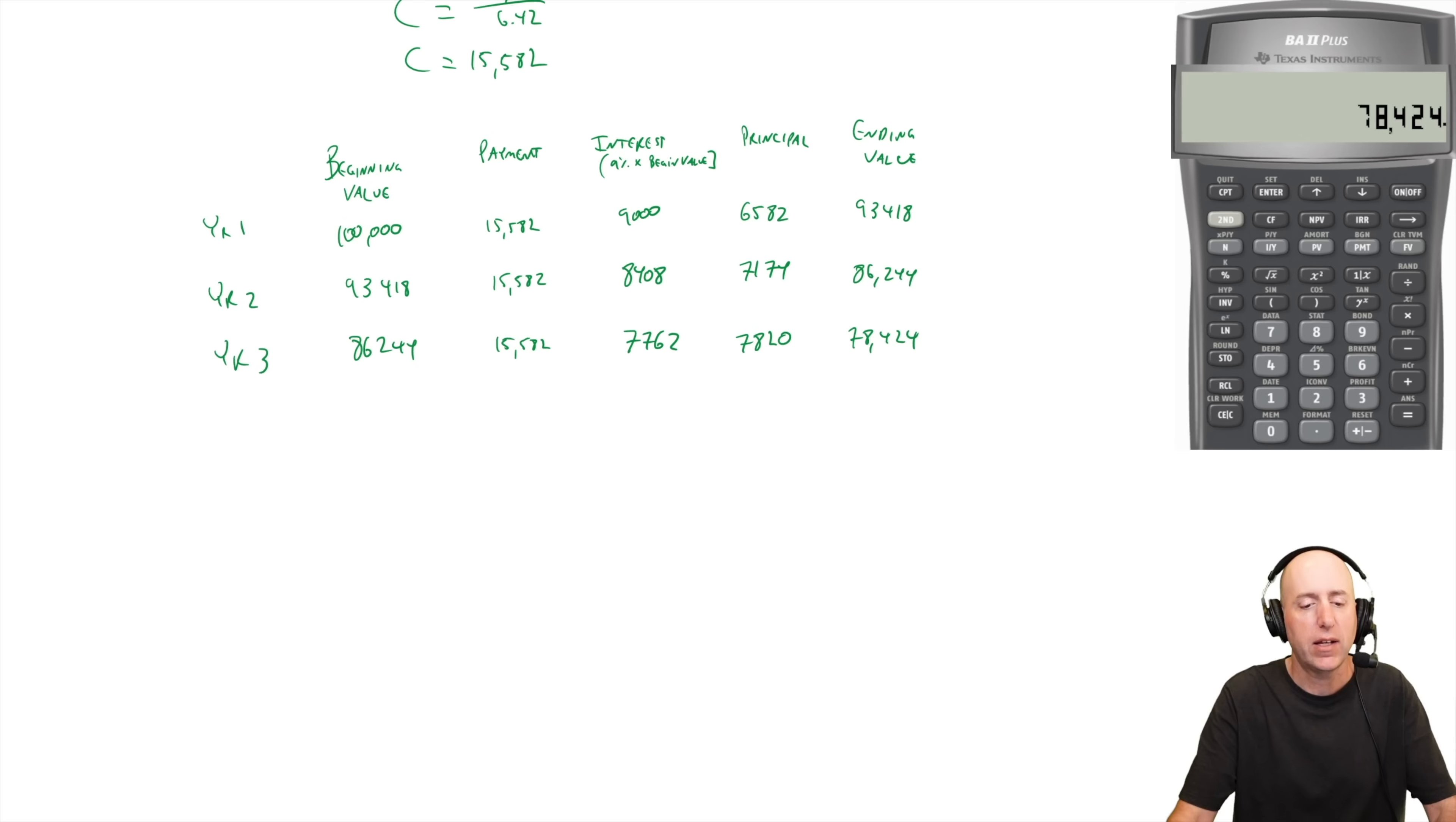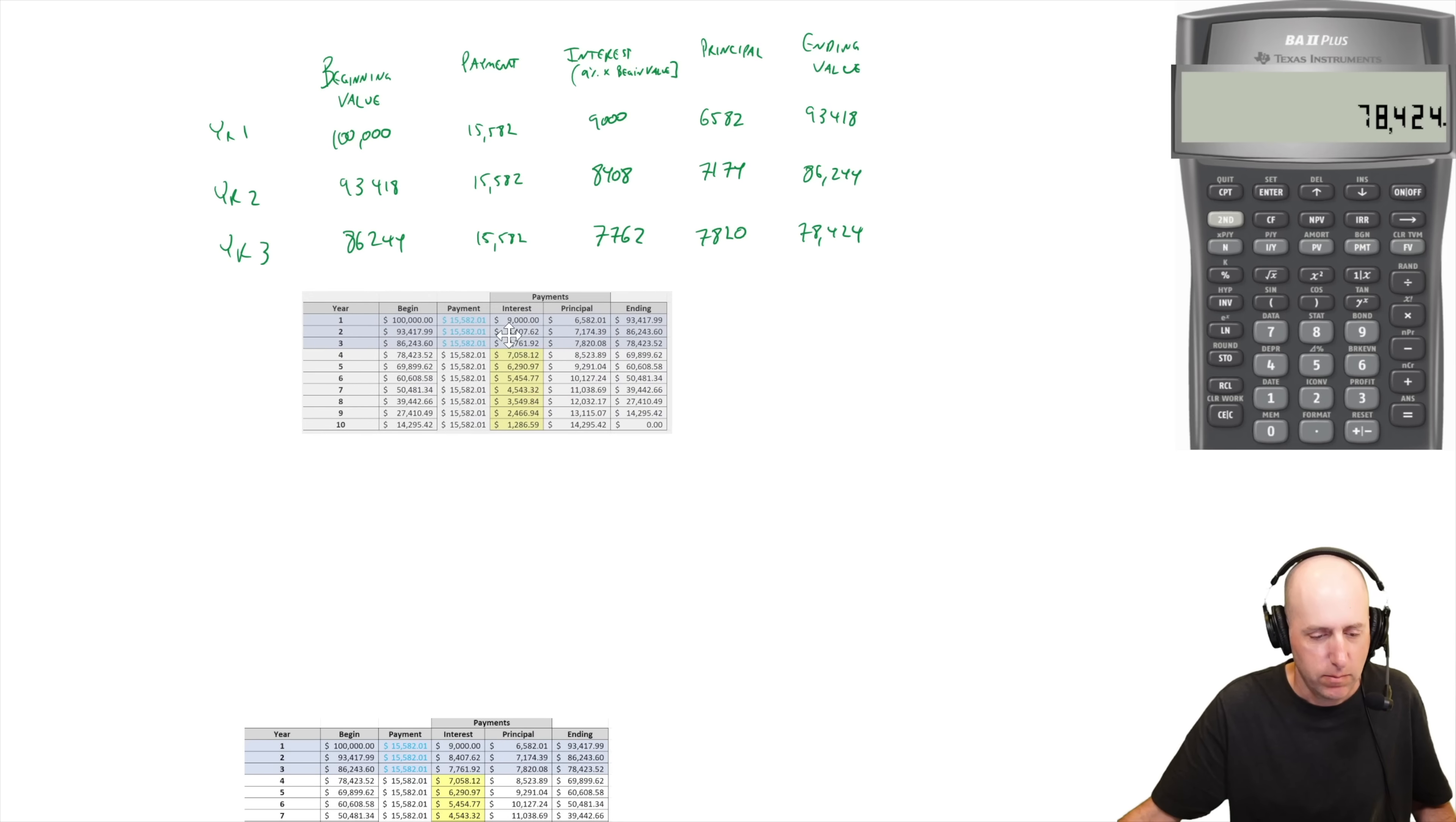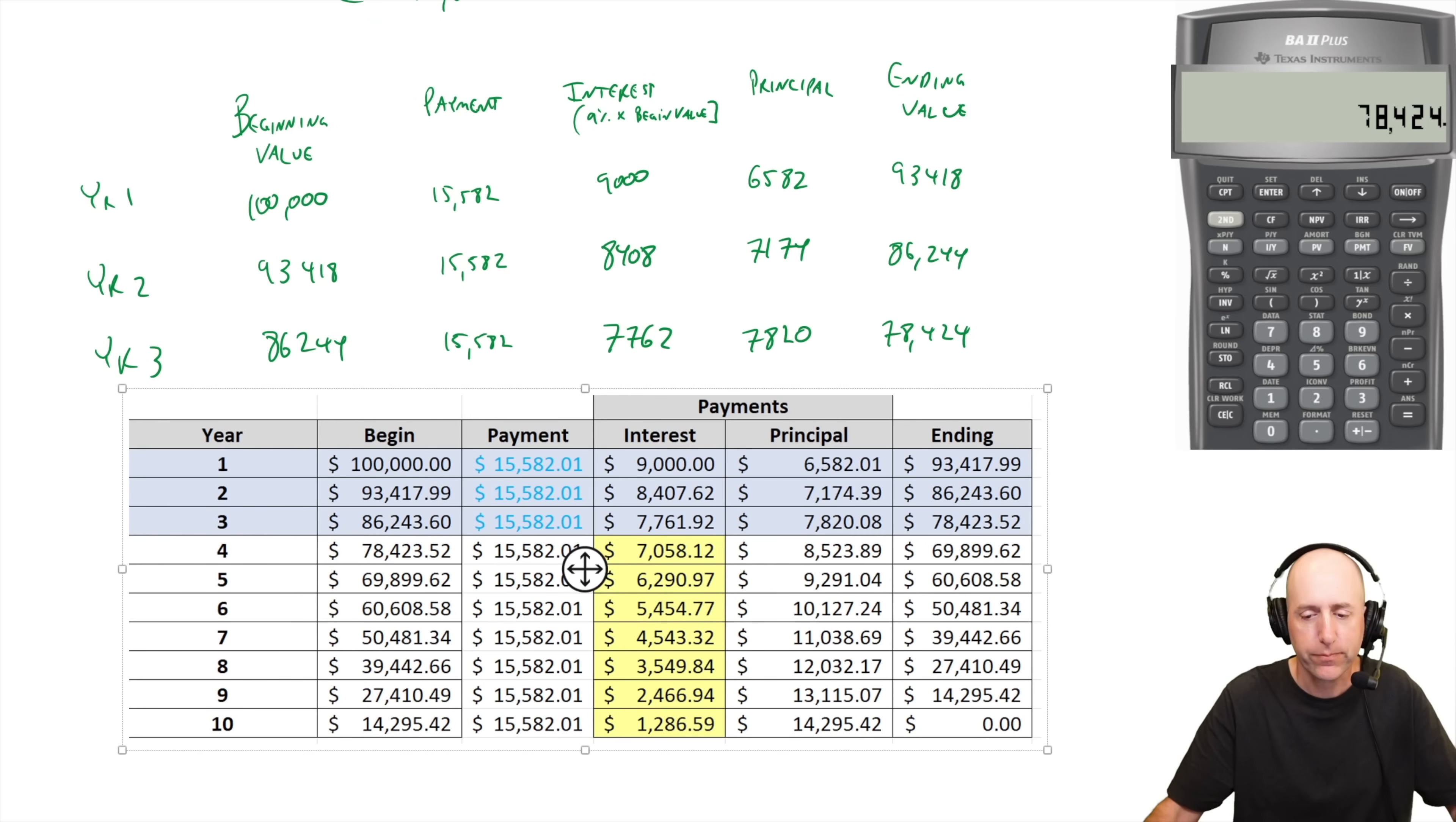And we could keep going. And in fact, I did this in Excel previously as I was setting it up and you can see Excel. I went to the penny, but let's just sort of compare notes here. A couple of things happen. As you look at this, the first is we matched, right? 93,418, 86,244, 78,424. Yes. Right. We got it right. We've solved the problem. Thumbs up.